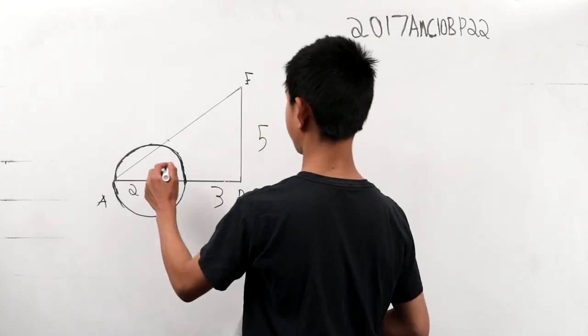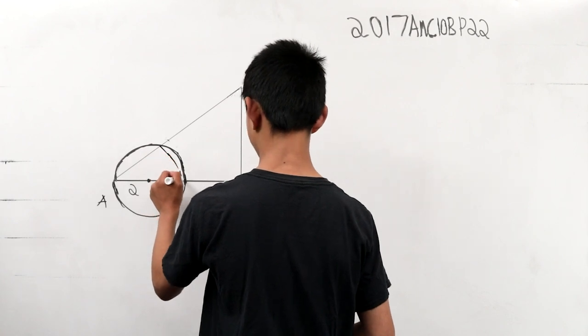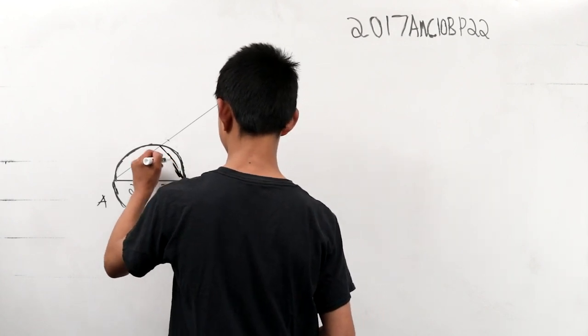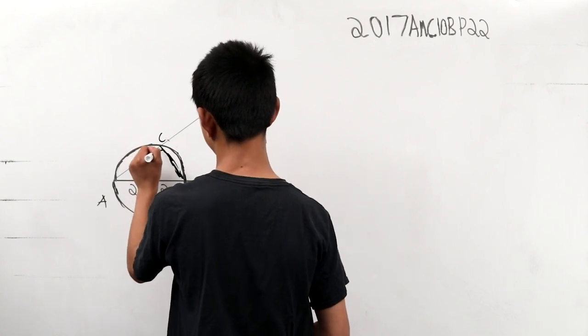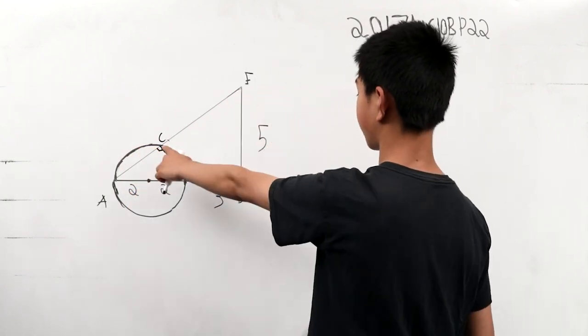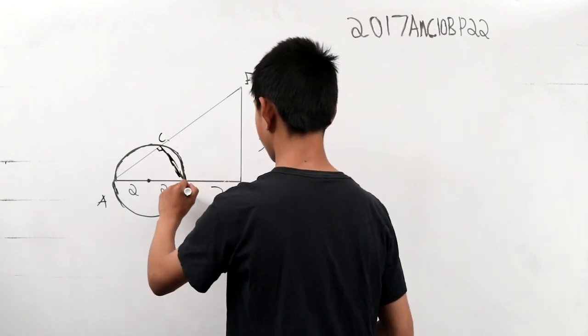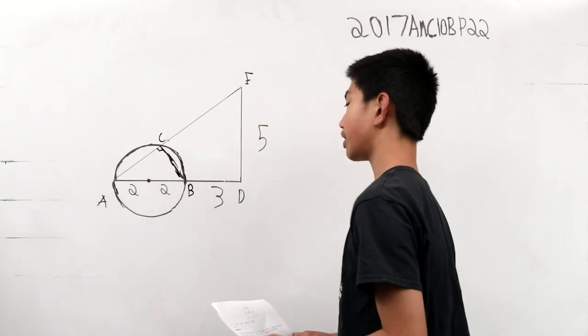So we have this thing here and when we construct this line, this is a point C and this happens at a 90 degree angle and we want to find the area of this triangle, triangle ABC.